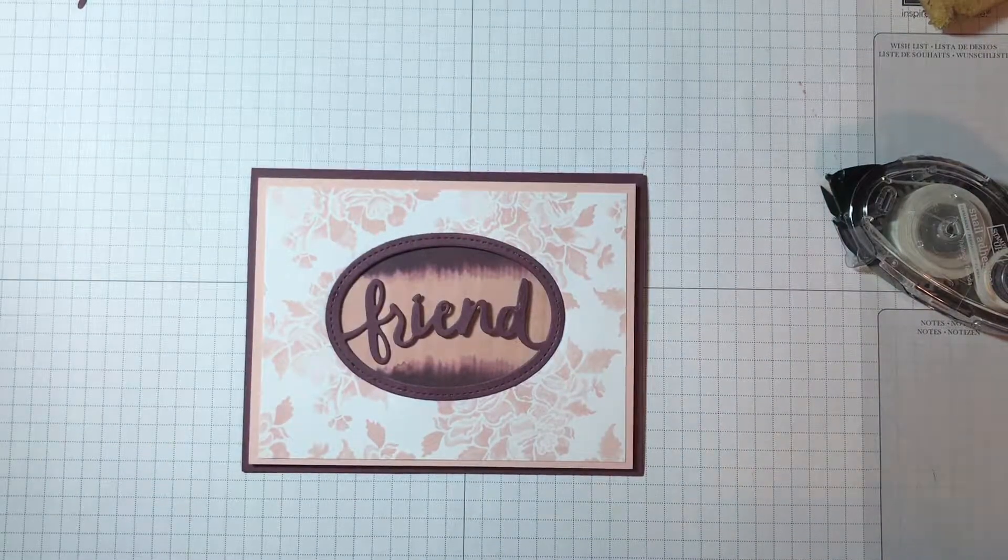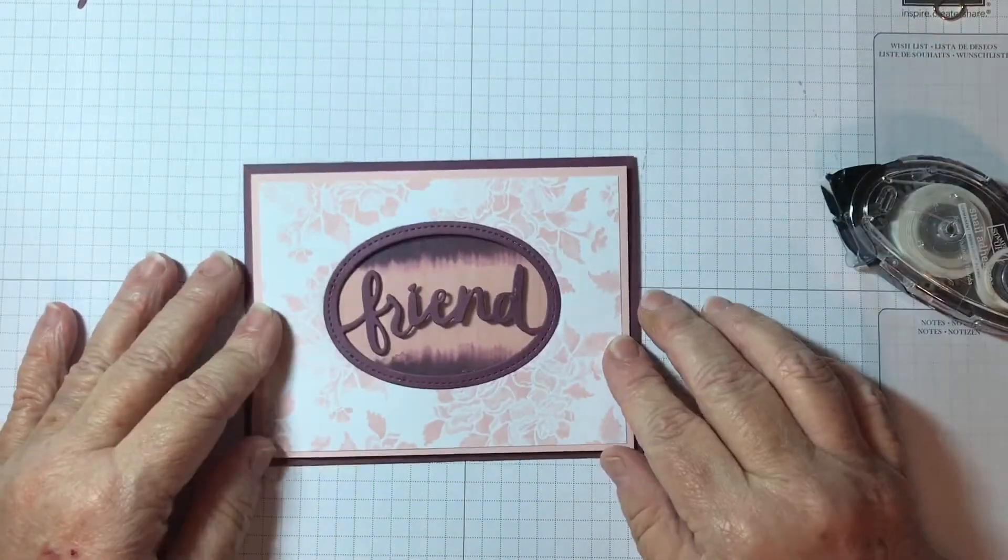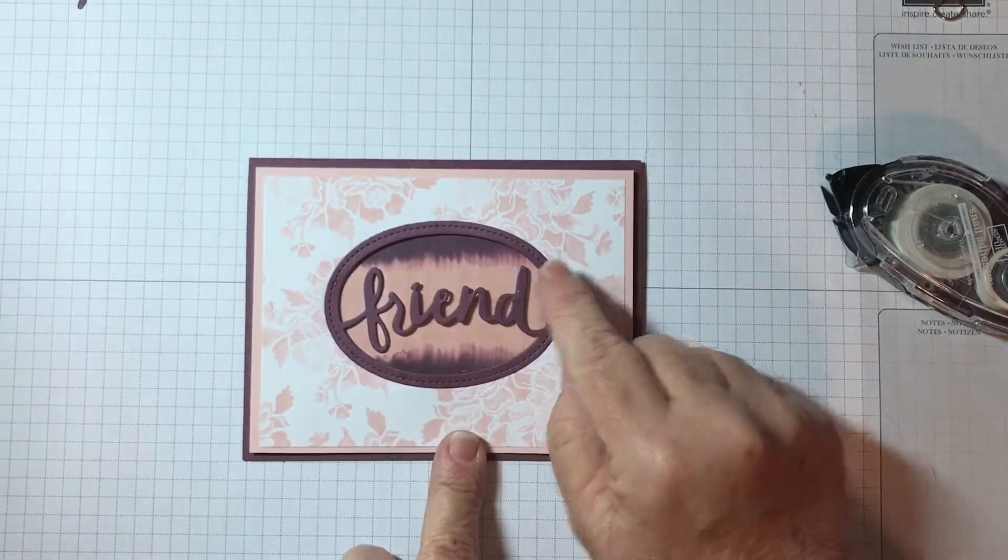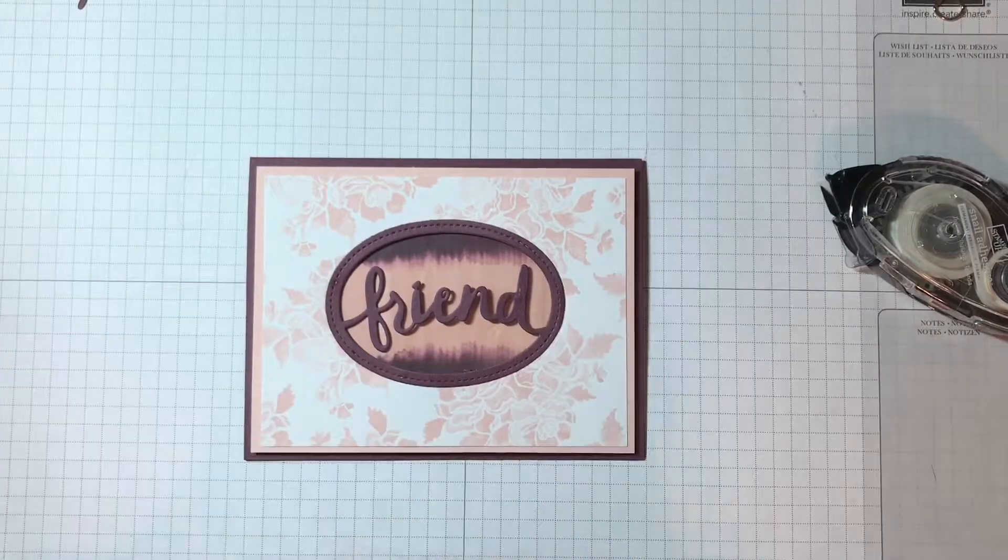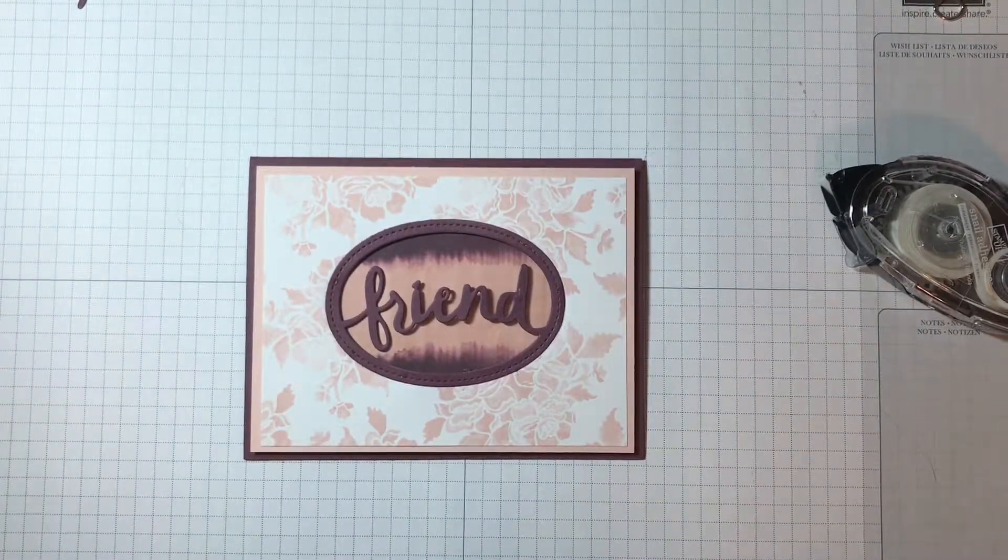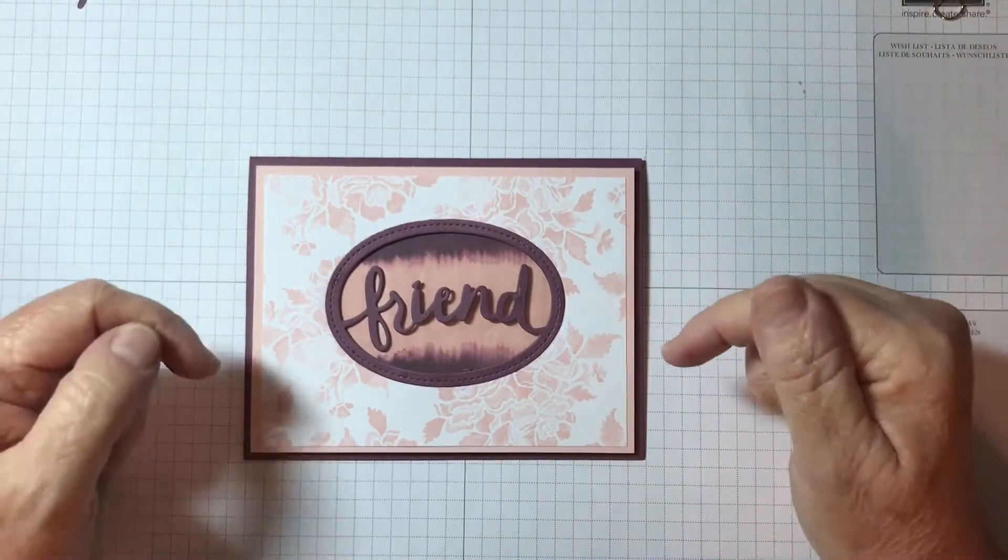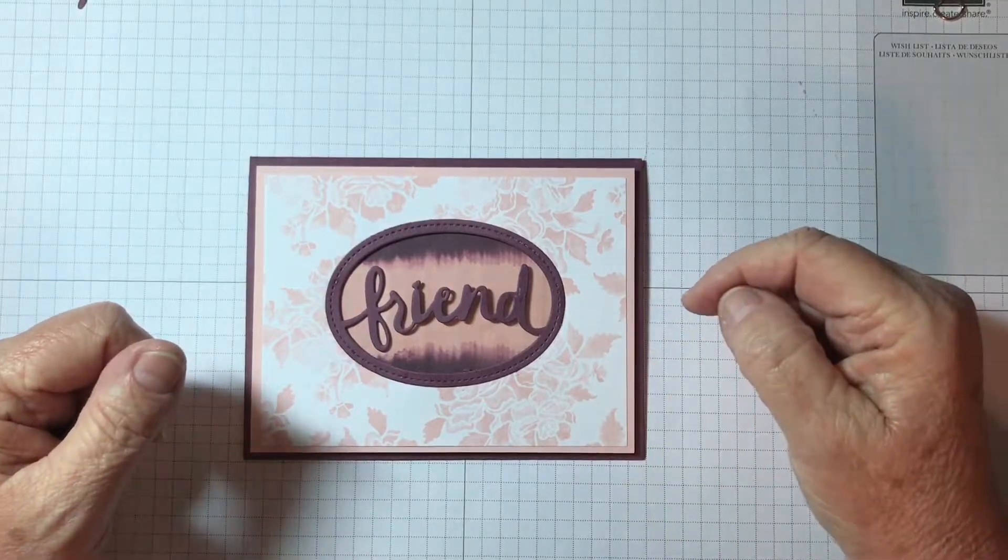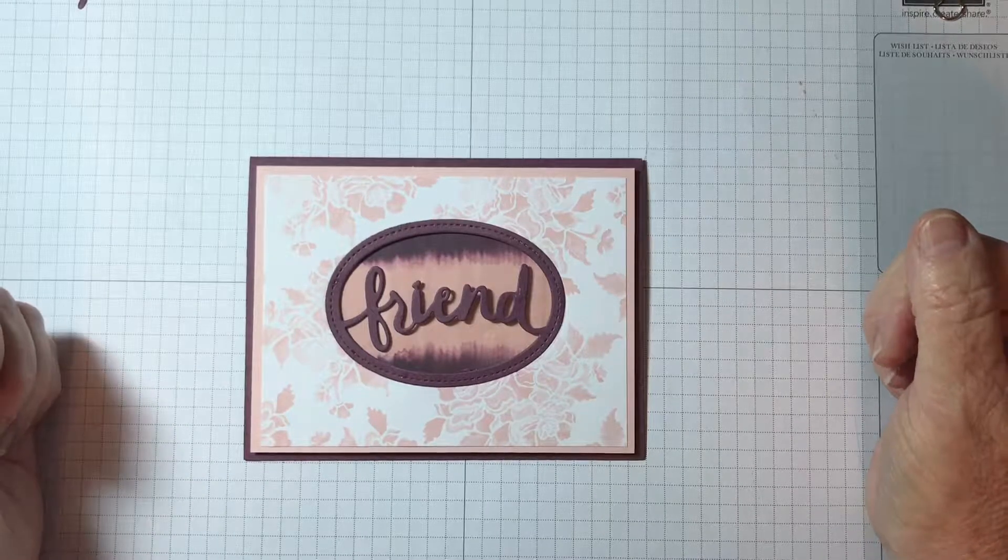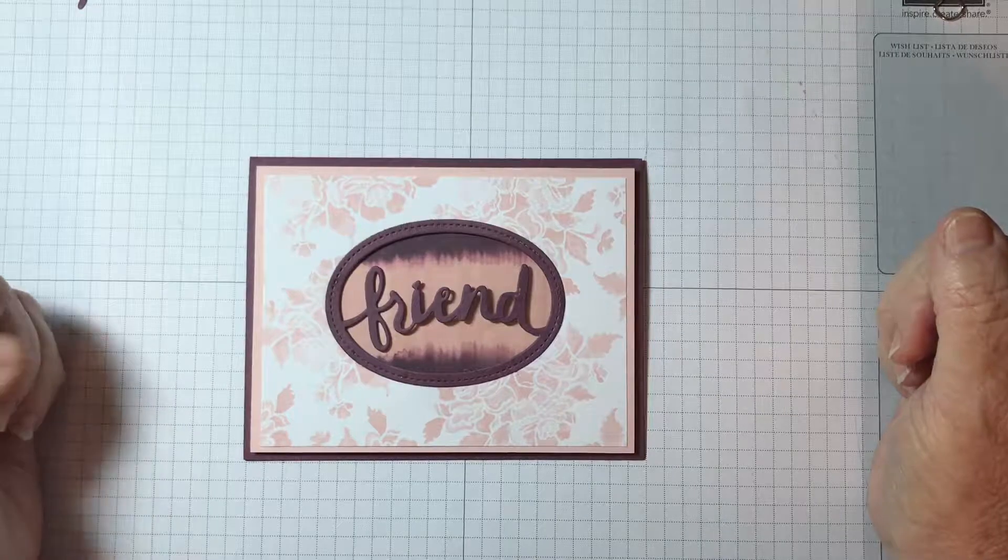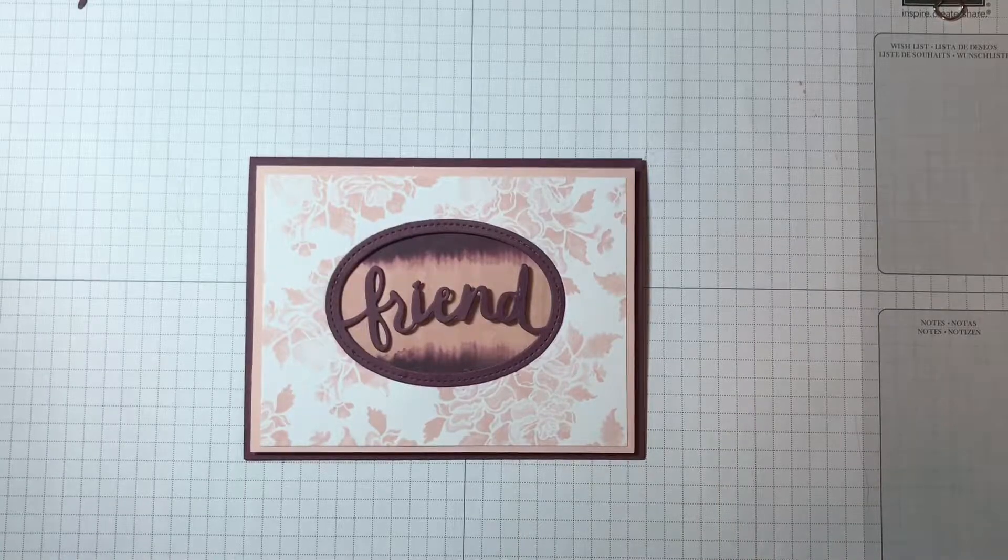And that is our card. Isn't that absolutely wonderful? So here's our inside and here's our front. I really love this technique with the re-inkers and how that gives such a nice background to that card and kind of makes that friend pop out. I hope you enjoyed the video today. If you have any questions, just put it in the comments below. Also, feel free to give me a thumbs up if you liked the video. Again, I apologize about the firecracker noise. You never know when you're recording a video what's going to happen outside.